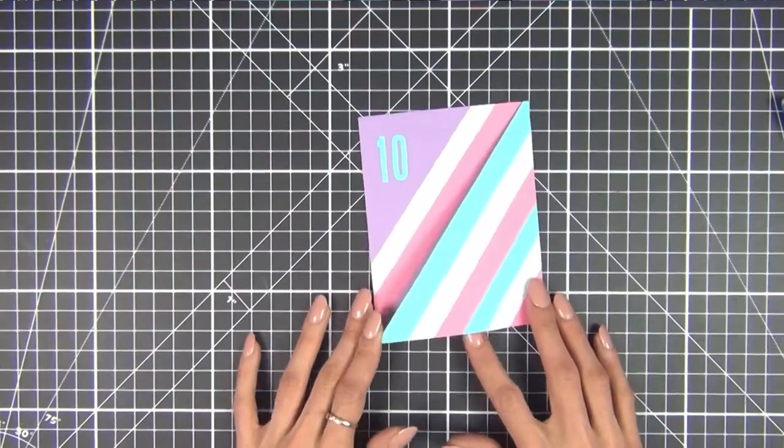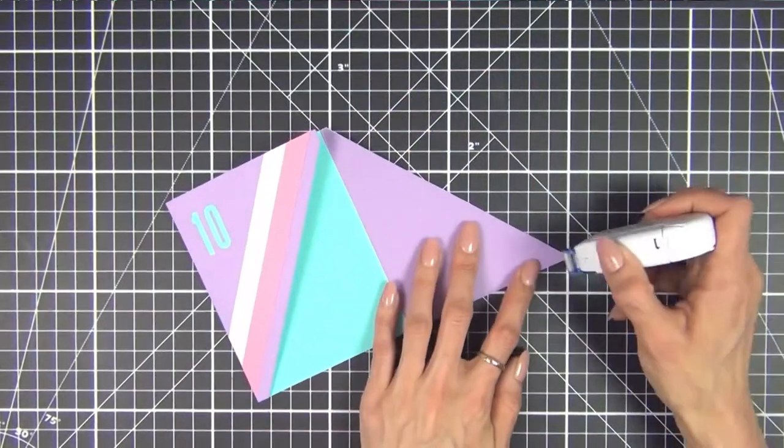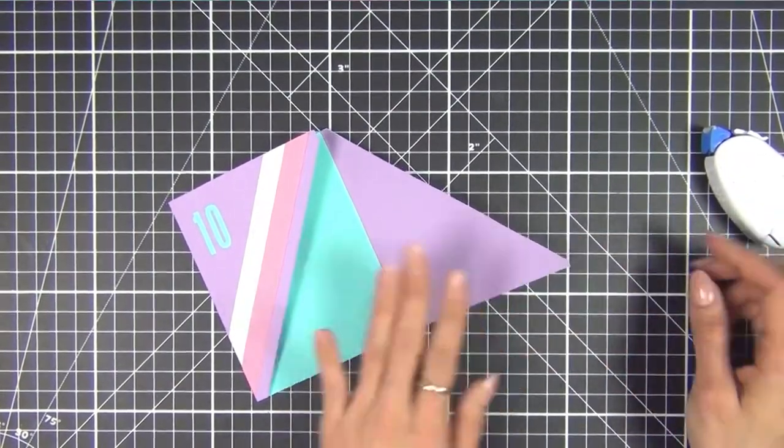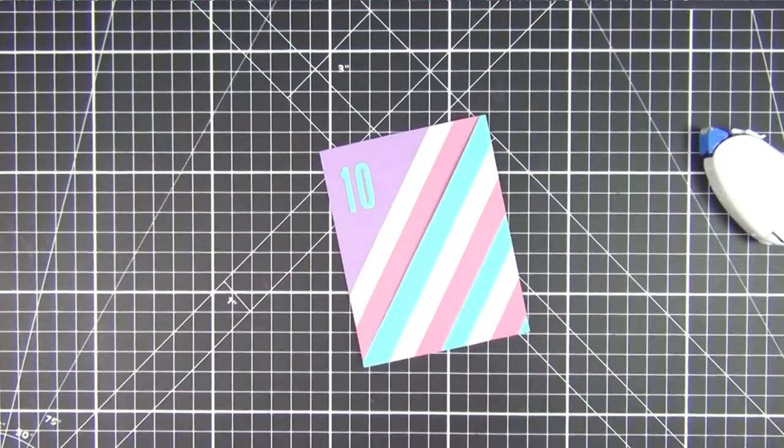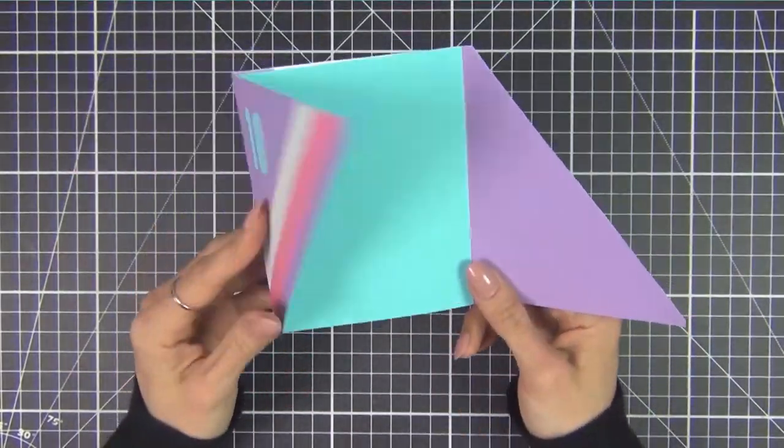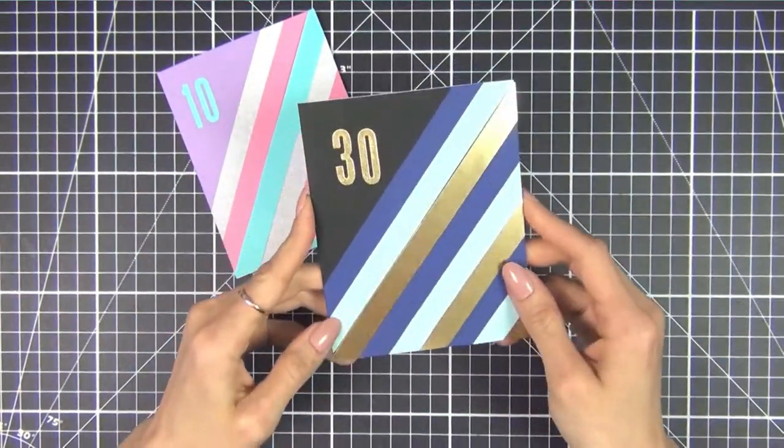Another optional step is to add a teeny tiny bit of tape runner adhesive to the very bottom corner and then remove some of the tack by dabbing it several times with your fingers. This helps keep it closed and by dabbing it with your fingers it ensures it won't tear the cardstock when the card is opened.